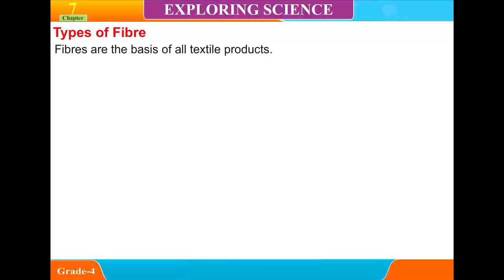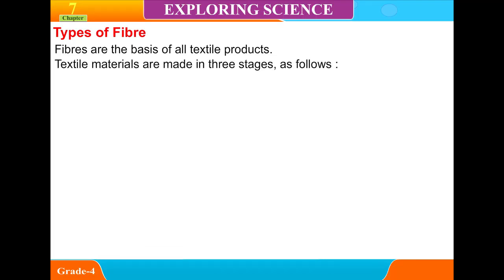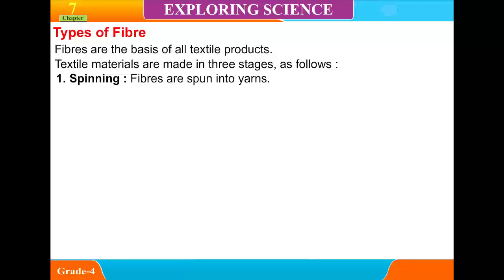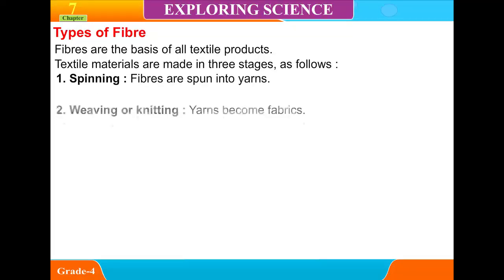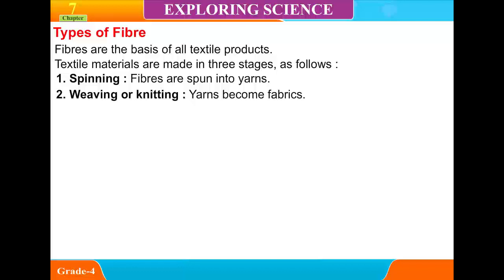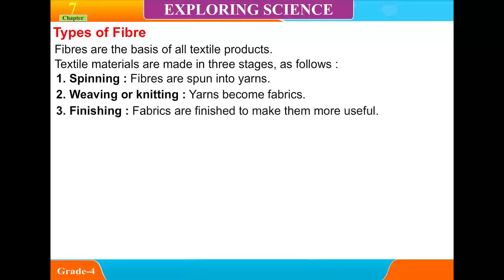Types of fiber. Fibers are the basis of all textile products. Textile materials are made in three stages: first, spinning — fibers are spun into yarns; second, weaving or knitting — yarns become fabrics; and third, finishing — fabrics are finished to make them more useful.